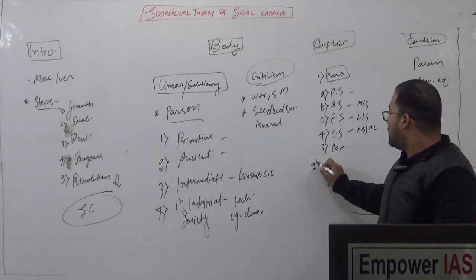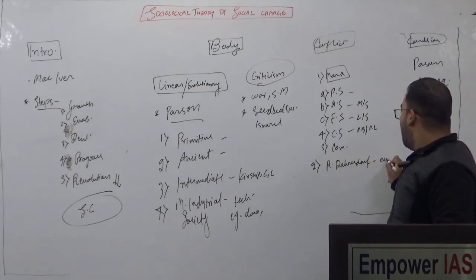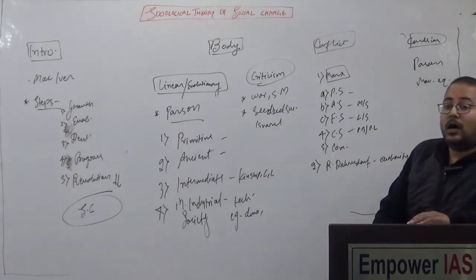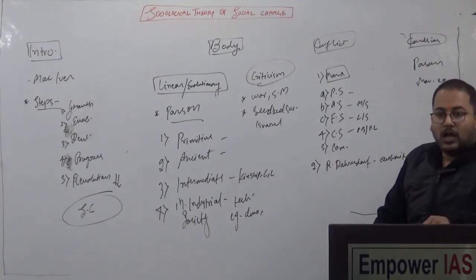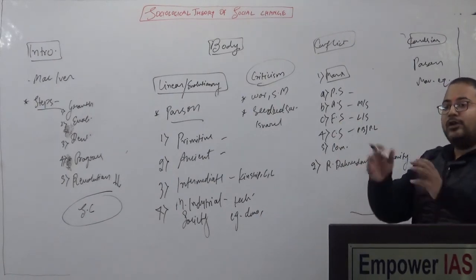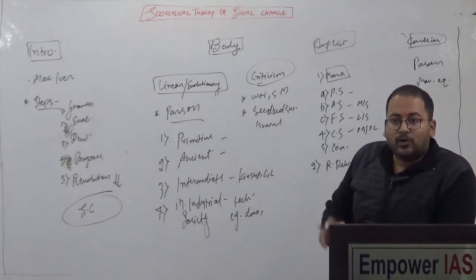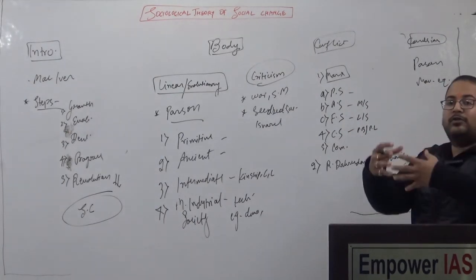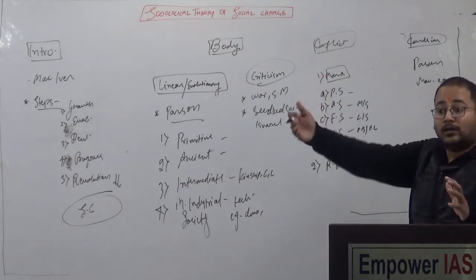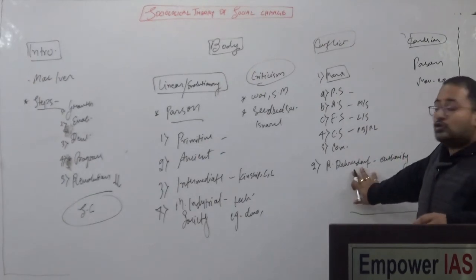We will also discuss the concept of Ralph Dahrendorf. He said it is the unequal distribution of authority which leads to conflict in the society, which brings social changes. Some people are holding the authority and they are in the minority, while those who are in the majority never hold the authority. So there is conflict between those holding authority and those not holding it, which results in social changes.